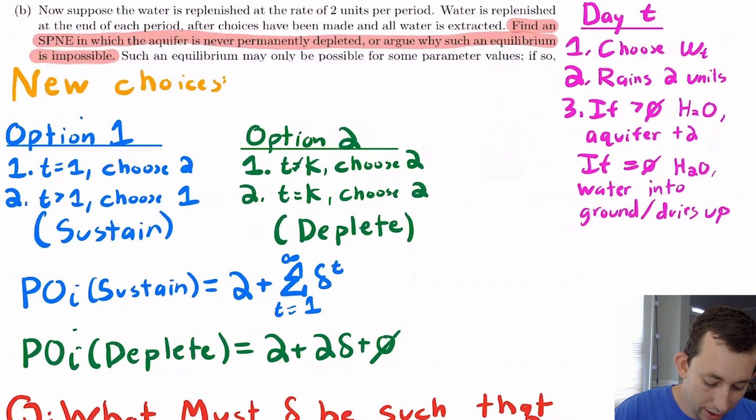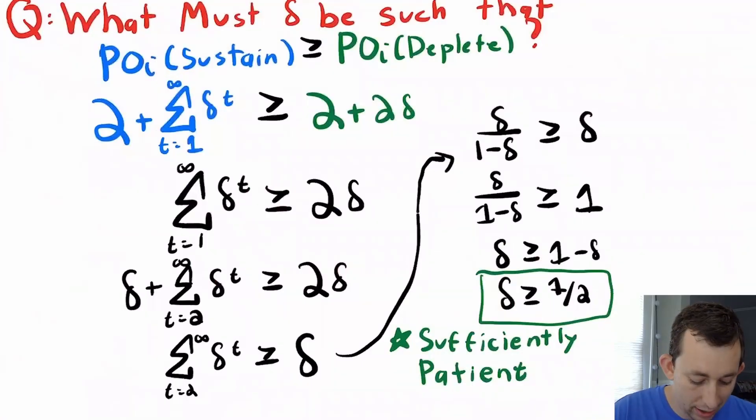So if we sustain, I'm going to get two plus this infinite sum of delta t times one. And if I deplete, I'm going to get two plus two times delta, which if we want to sustain the aquifer, and we're trying to find an SPNE in which the aquifer is never permanently depleted. For that to happen, the payoff of sustaining the aquifer must be greater than or equal to the payoff of depleting the aquifer. So you can already see we're going to have some sort of condition with respect to delta. And if I just set up that math and go through this, you can see what's going to happen is we are going to get this infinite sum, we're going to use our trick for a geometric series and the sum of that geometric series, which is delta over one minus delta.